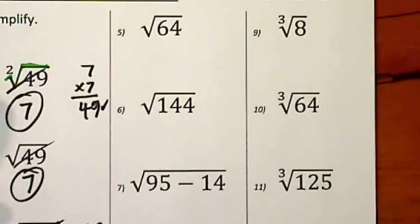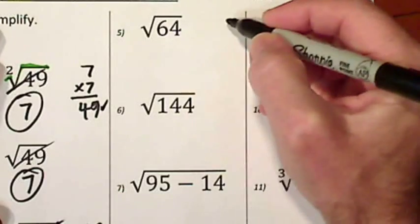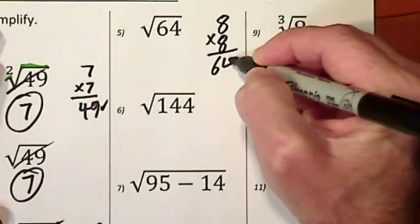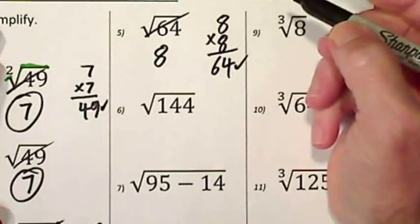We'll do a few more. The square root of 64. 8 times 8 is 64. So the square root of 64 is 8.